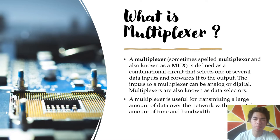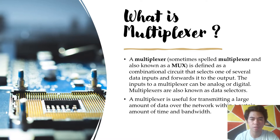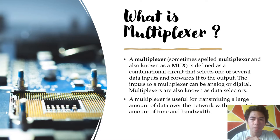What is a multiplexer? A multiplexer — sometimes abbreviated as MUX — is defined as a combinational circuit that selects one of several data inputs and forwards it to the output. The input to a multiplexer can be analog or digital. Multiplexers are also known as data selectors. A multiplexer is useful for transmitting a large amount of data over a network within a certain amount of time and bandwidth. Basically, the multiplexer has many inputs but only one output.